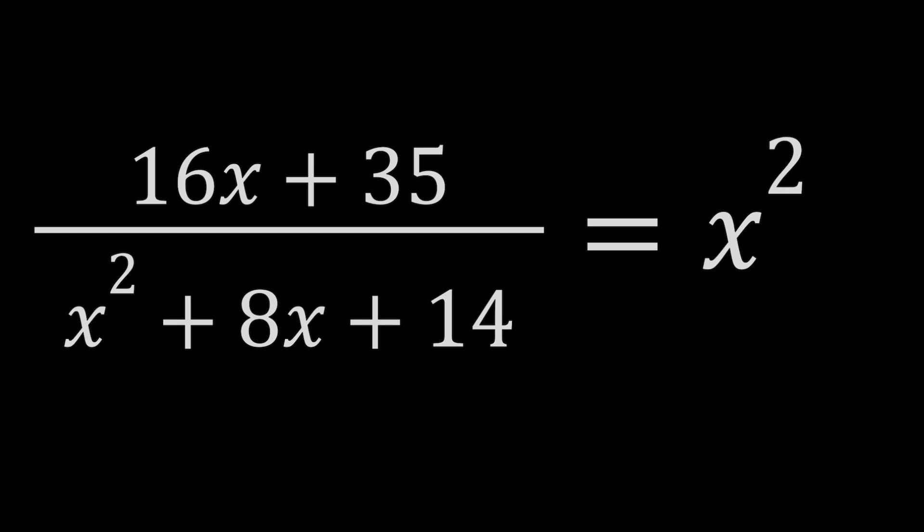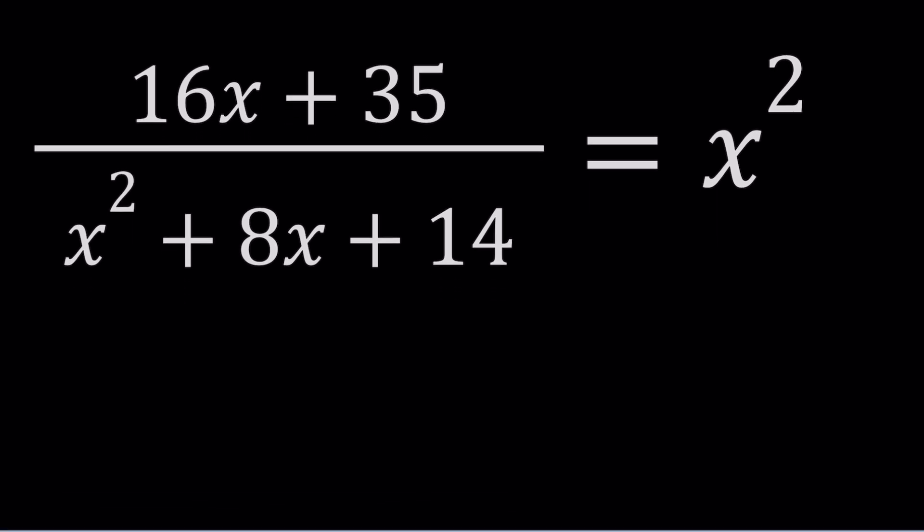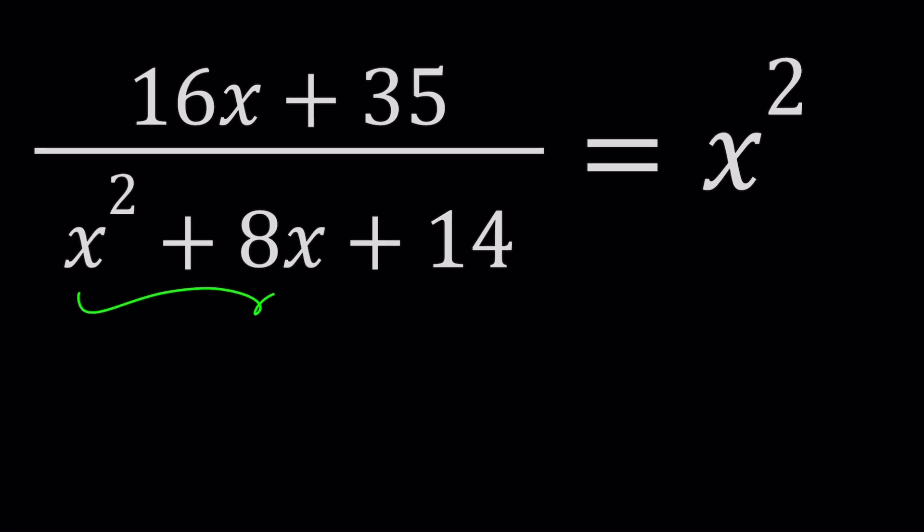Now this is a rational equation because we have a polynomial divided by another polynomial, but we're going to turn this into a polynomial equation. One of the things you need to be careful about with rational equations is the fact that the denominator should never be zero, because if that's the case then we have something undefined. You can't divide by zero, it's totally not allowed. So we need to make sure whatever we find for x values, this should not equal zero.